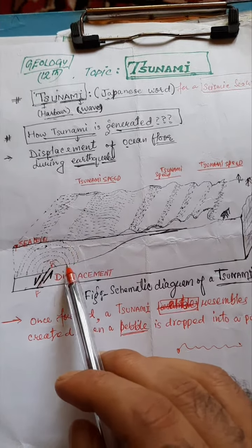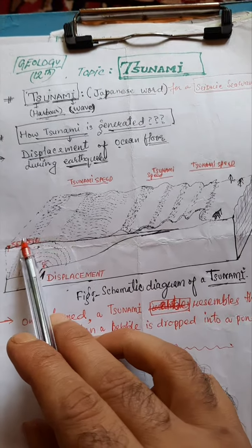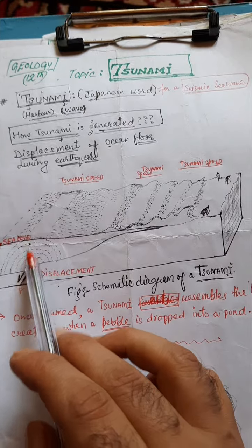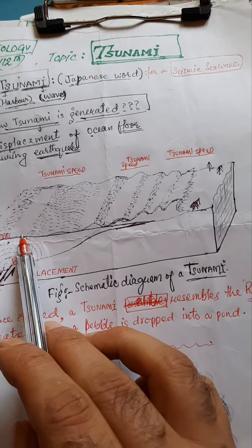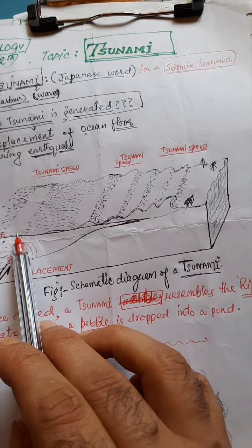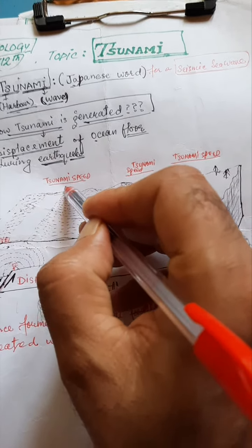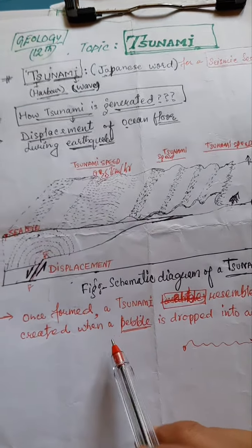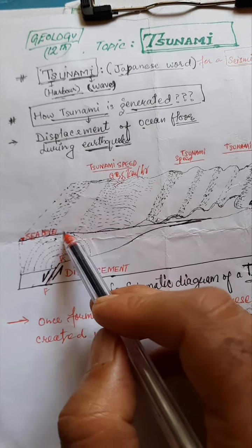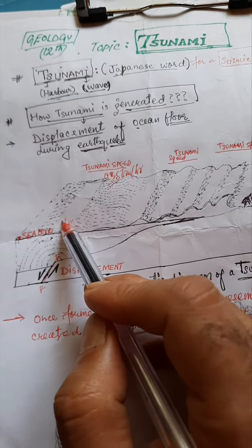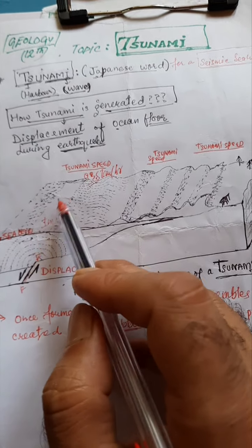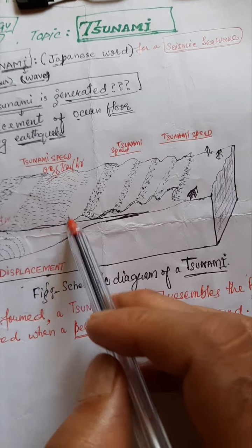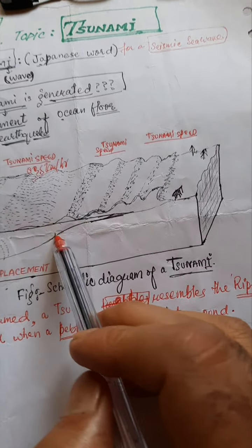Where ocean floor displacement occurs, water waves are generated. In the open ocean, the water depth is very high, so the speed of the wave is high — about 800 to 850 kilometers per hour. The wave height in the open ocean is almost 1 meter. So the wave is very fast but the displacement of water is not much; the wave height is not much. The speed of the wave correlates with the ocean depth.